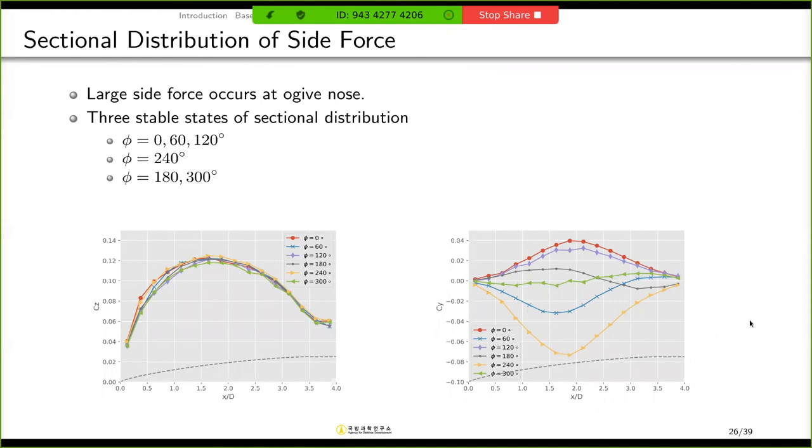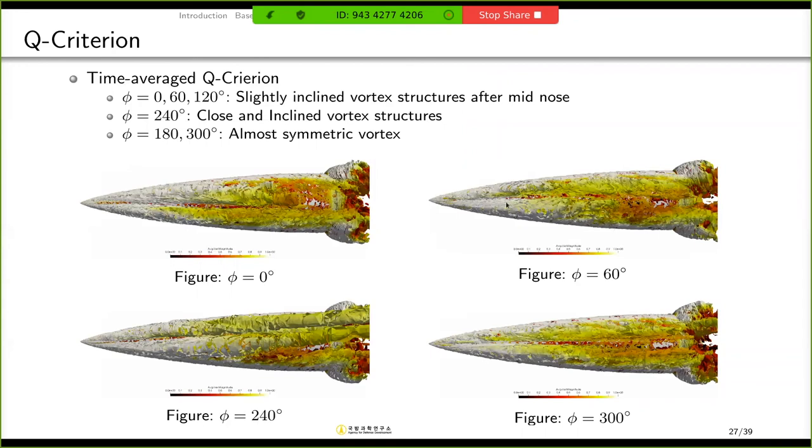And I also analyzed the vortex structure. Here, I compare the time-averaged Q criterion. And this is the bank angle of 0, 60, 240, and 300 degrees. When the bank angle is 0 or 60, these two vortex structures are almost symmetric in front of the nose. But they slightly incline after mid-nose. And bank angle 0 and 60 are opposite. And when the bank angle is 240, these two vortices are very close and inclined upward, which gives very big side force. And when the bank angle is 300, these two vortex structures are symmetric and produce no side force.